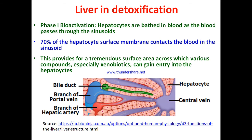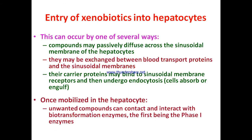Xenobiotics can gain entry into hepatocytes, and the liver has the highest concentration of biotransformation enzymes. These two factors — the large surface area exposed to blood and the highest concentration of biotransformation enzymes — make the liver the primary site of biotransformation. Entry of xenobiotics into hepatocytes can happen through different ways.